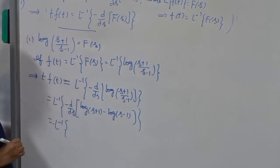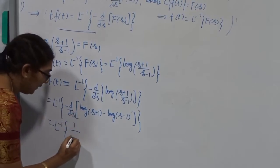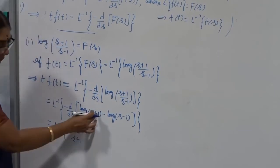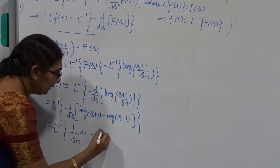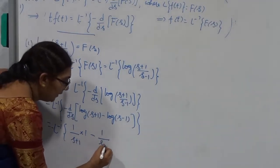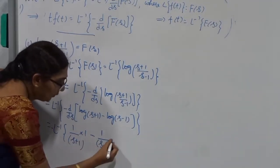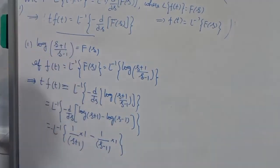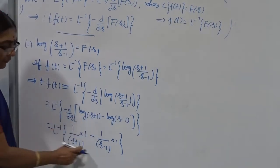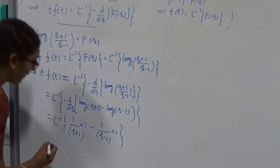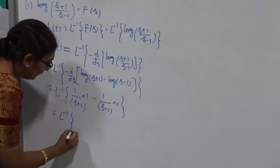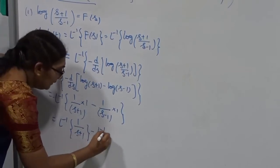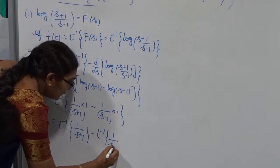Taking the derivative: derivative of log(s+1) is 1/(s+1) times derivative of (s+1) with respect to s, which is 1, plus 0 since the constant. Minus the derivative of log(s-1), which is 1/(s-1) times derivative of (s-1) with respect to s, which is 1. After taking the first derivative, both terms are in standard form. By the linearity property this can be written as L⁻¹ of 1/(s+1) minus L⁻¹ of 1/(s-1).